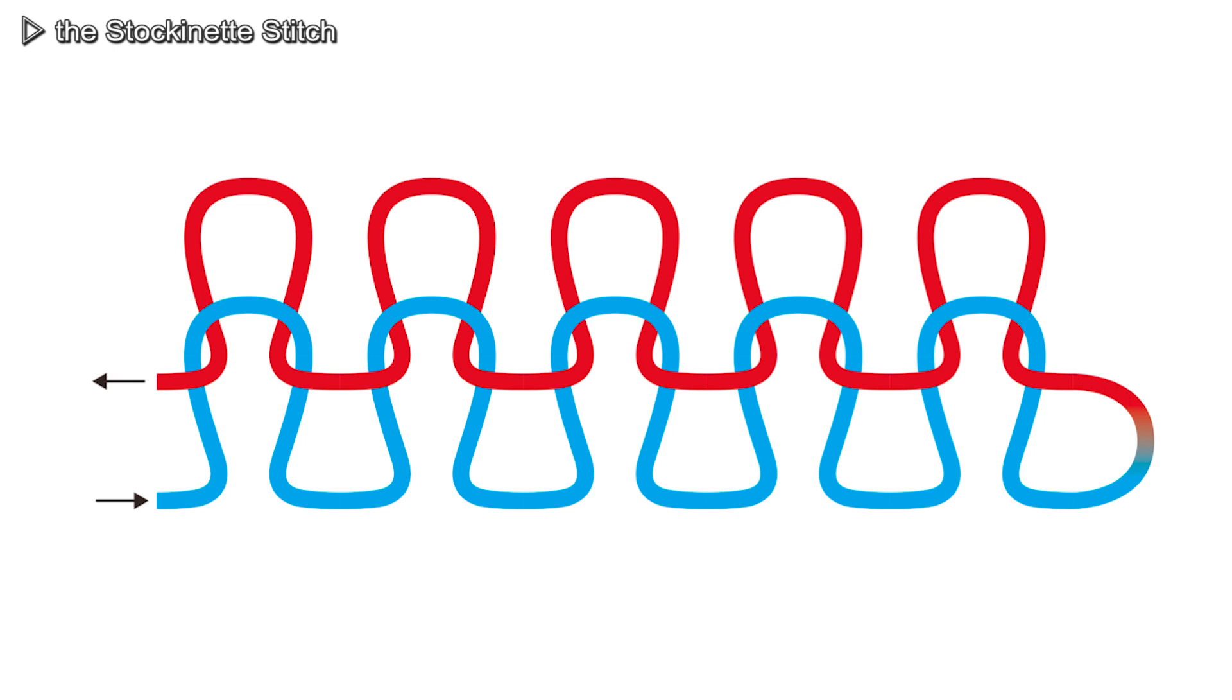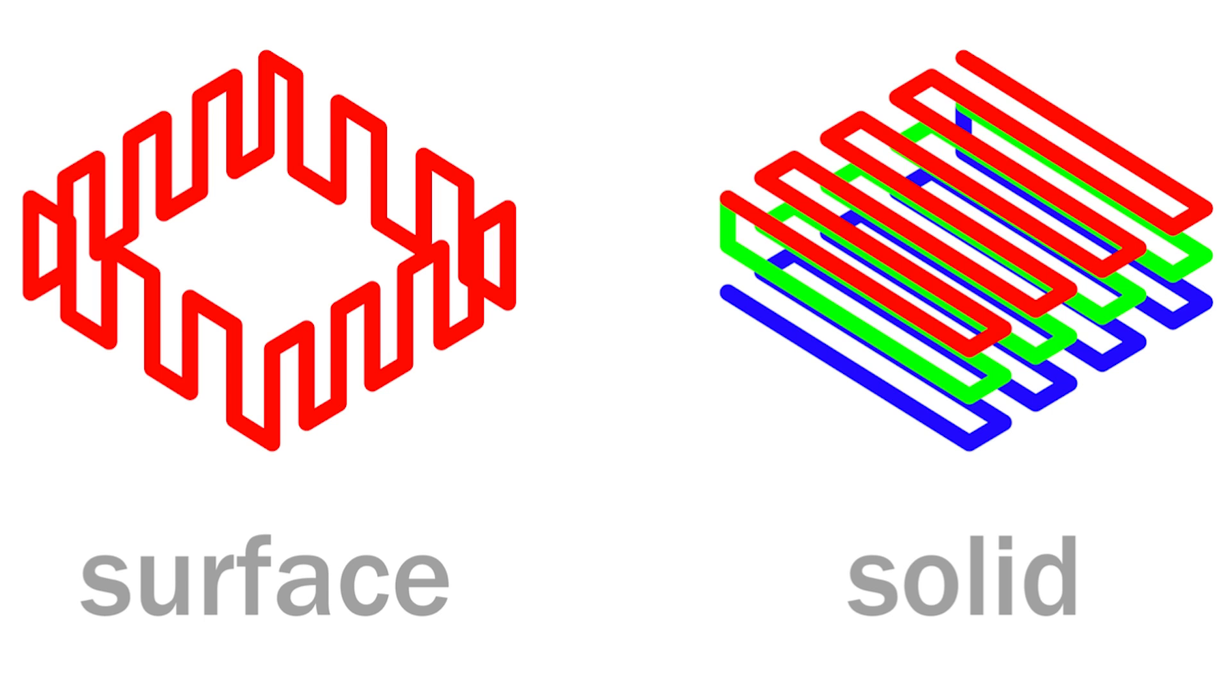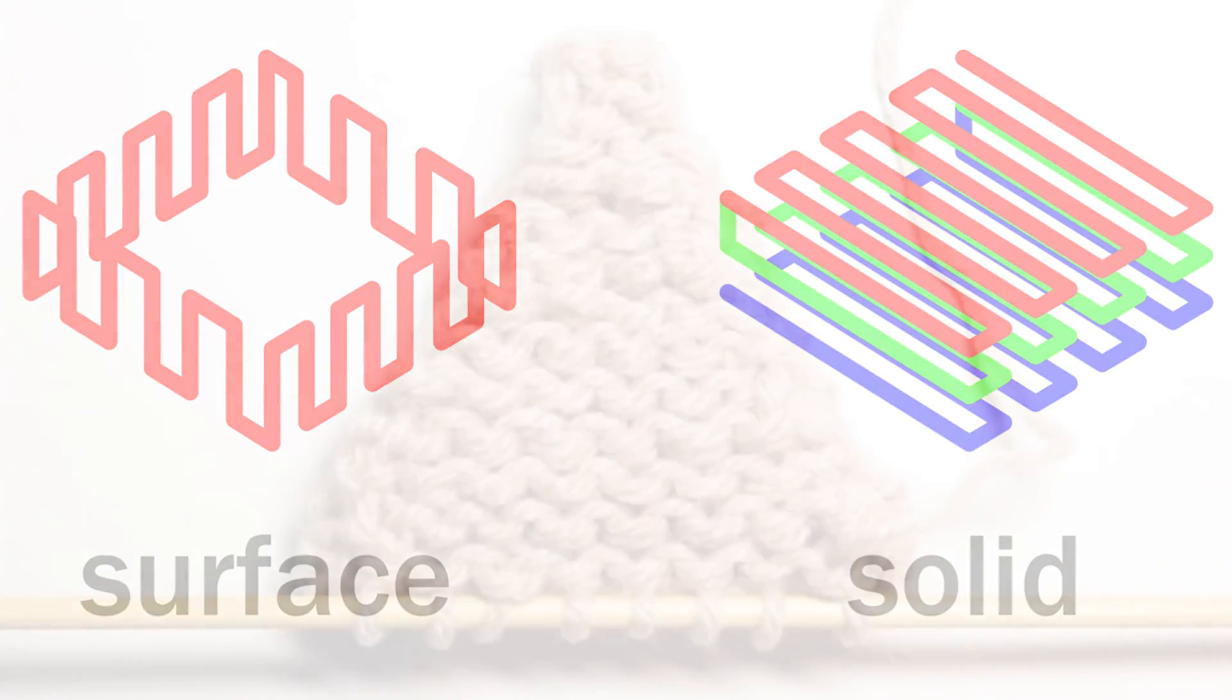the bottom layer is created using a stockinette stitch, while knitted textiles are then layered to create the three-dimensional solid center.